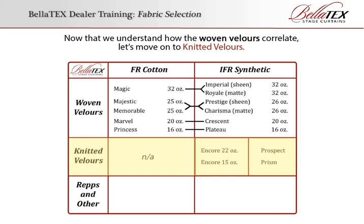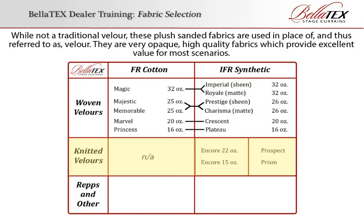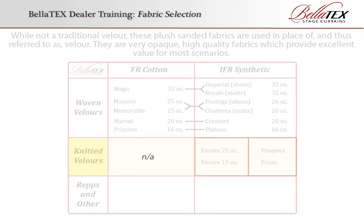Knitted velours usually have a brushed appearance. There are no cotton knitted velours. Synthetic knitted velours are useful for many different scenarios, from front setting curtains to rear setting curtains. While not a traditional velour, these plush sanded fabrics are used in place of and thus referred to as velour. They are very opaque, high quality fabrics which provide excellent value for most scenarios.